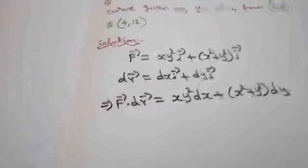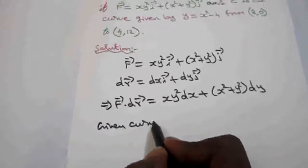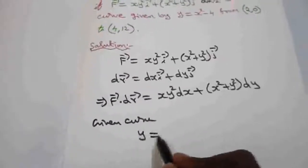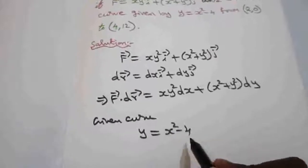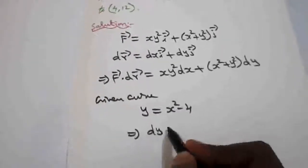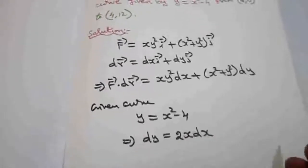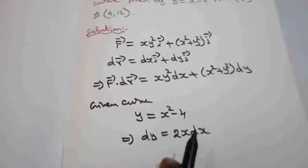And now the given curve is y = x² - 4, which implies that dy = 2x dx, and the constant term 0.